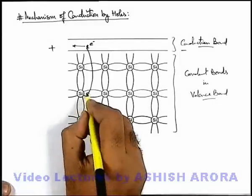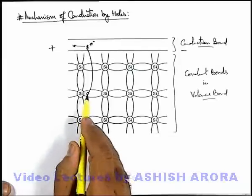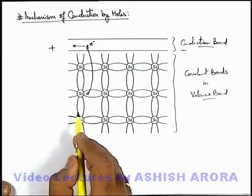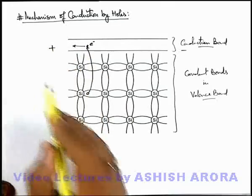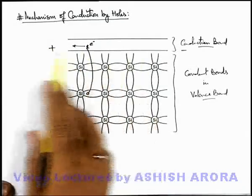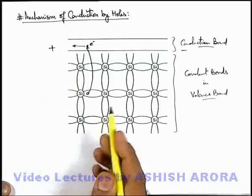So here we can see if there is a hole created, or we can say this covalent bond is broken, this electron will be transported toward high potential in the conduction band because electrons are free to move.